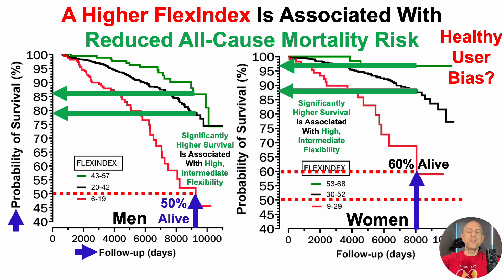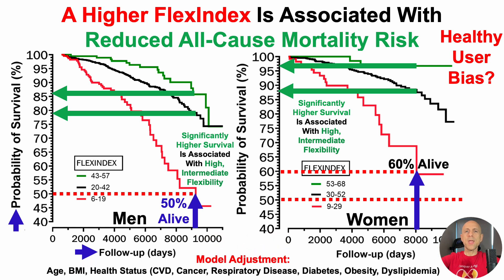Is this just healthy user bias — a measure of people who have higher VO2 max and higher whole body strength, regular fitness enthusiasts? One way to account for that is by adjusting the survival models for factors that could impact the association. They adjusted these models for age, BMI, and health status, including major diseases like cardiovascular disease, cancer, respiratory disease, diabetes, obesity, and dyslipidemia. However, these models were not adjusted for fitness status. Hopefully future studies will look at whole body flexibility and associations with all-cause mortality after accounting for VO2 max and some index of muscle strength, to help tease out how much of the flex index score is actually related to all-cause mortality risk.